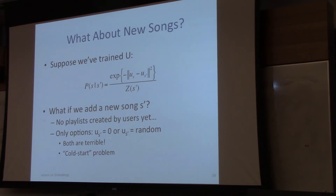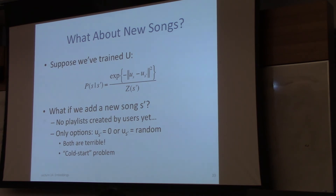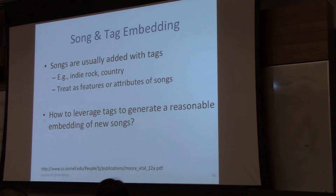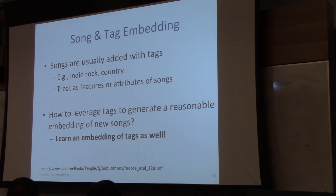What about new songs? This is the cold start problem. We've trained U and V on songs that we have playlists for — users have been exposed to these songs and added them to playlists. A brand new song has not been added to any playlist, and with regularization the U will be zero. One solution is to look at side information such as tags — songs are usually added with tags, which you can treat as attributes, to generate a reasonable embedding for new songs.